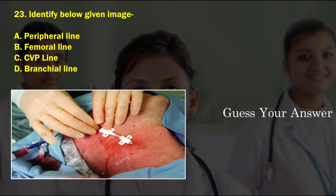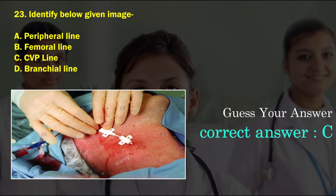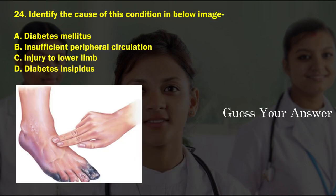Identify the below given image. Option A: peripheral line, option B: femoral line, option C: CVP line, option D: brachial line. The correct answer is option C, CVP line.